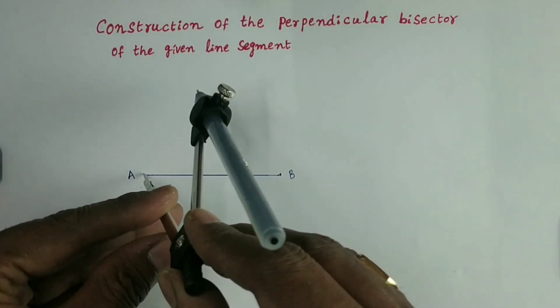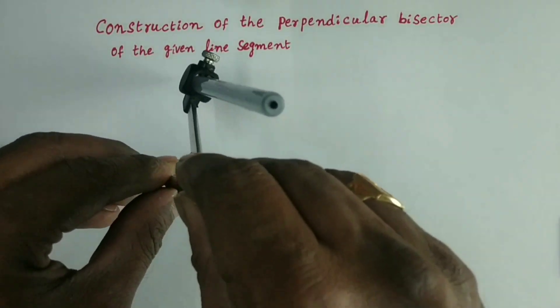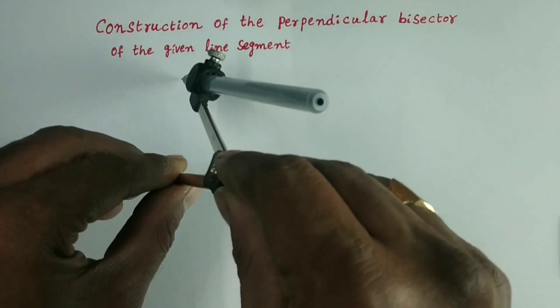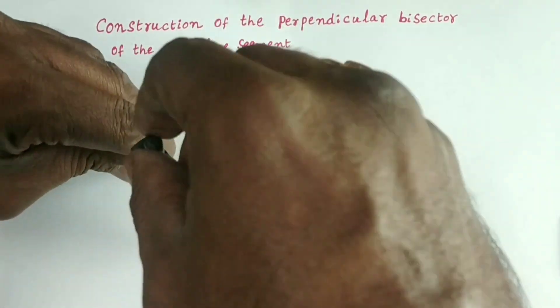Take A as center, more than half of AB as radius, draw two arcs. That means both opposite sides of the AB.